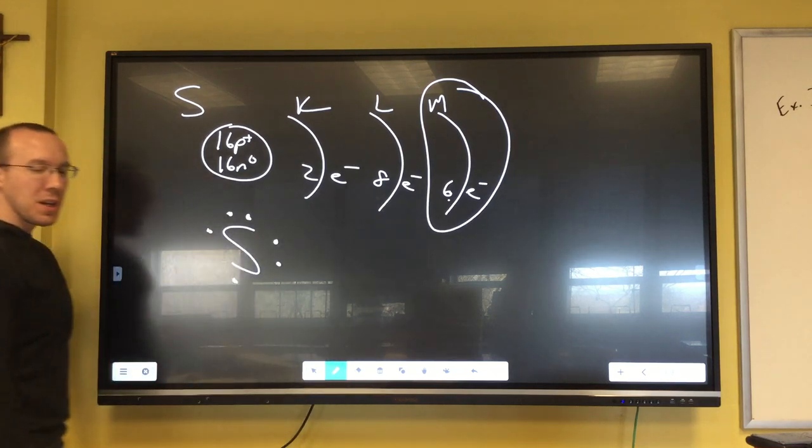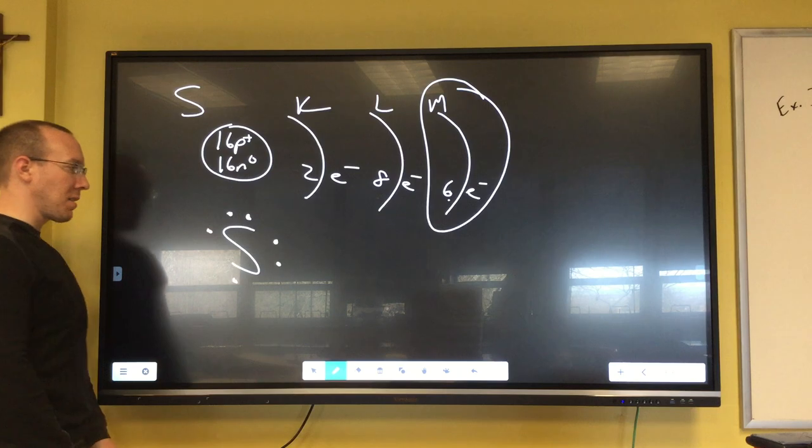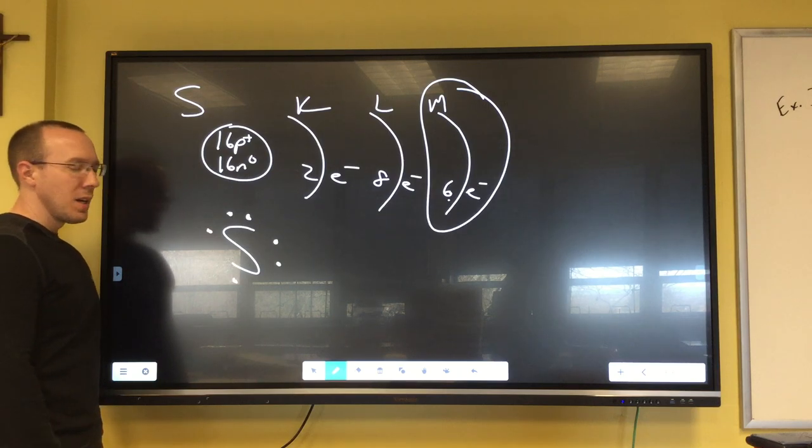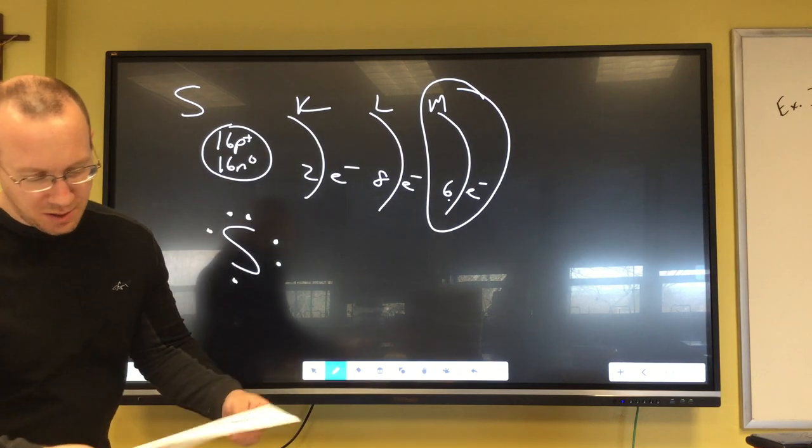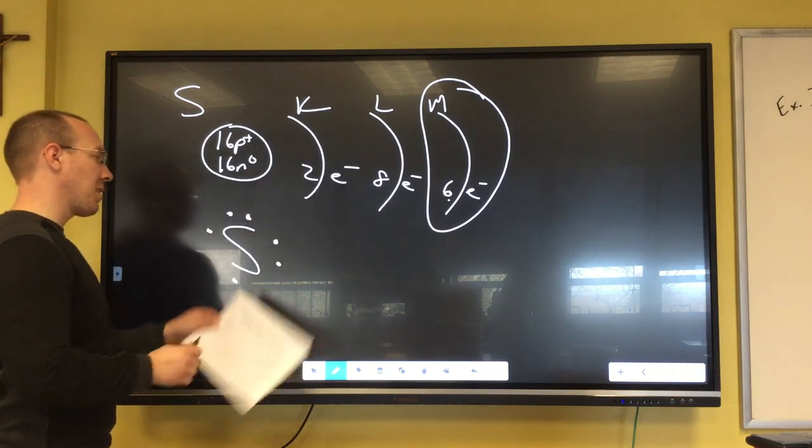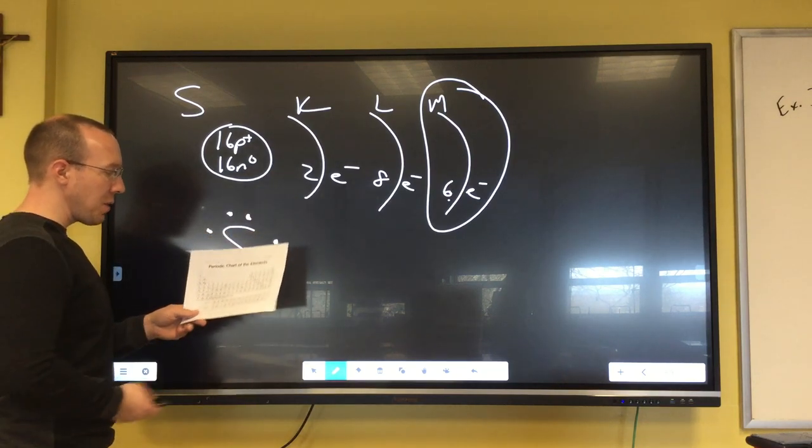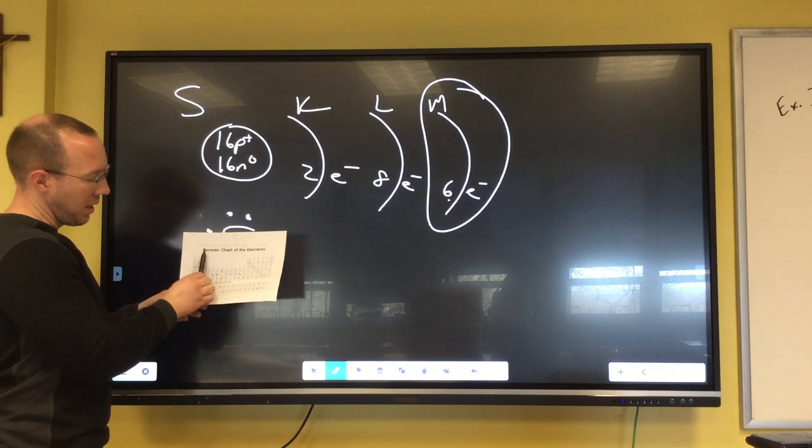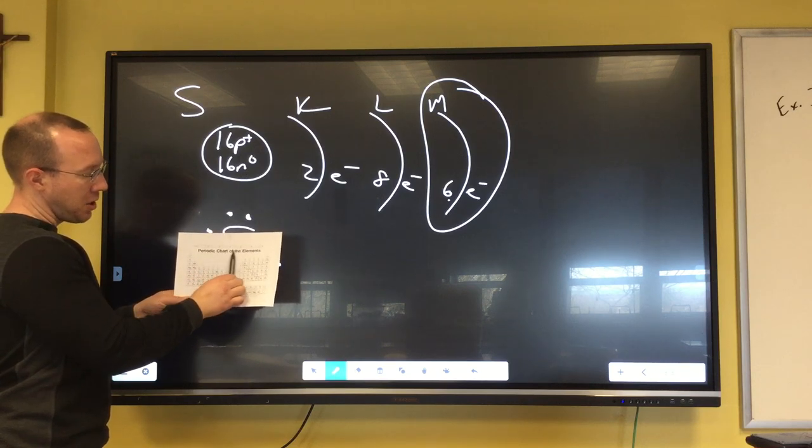So when we do our dot diagrams, sulfur would have one, two, three, four, five, six valence electrons that can be used for bonding. And we can do that for anything on the periodic table. Now the one thing that we did in class, we talked about the periodic table and we talked about eliminating the transition elements in the middle, or the transition metals in the middle.